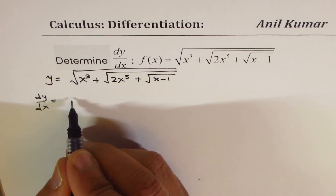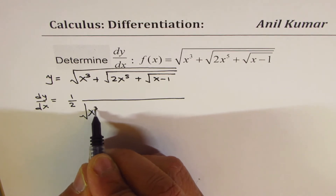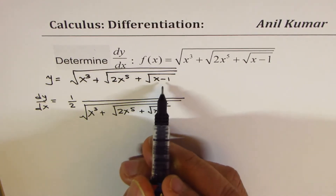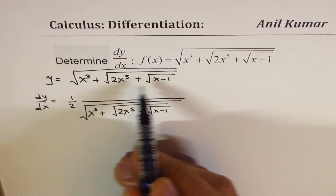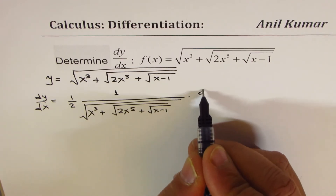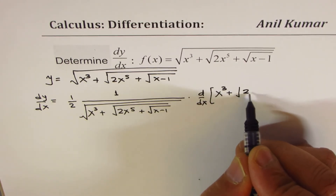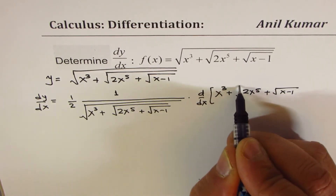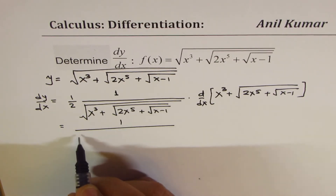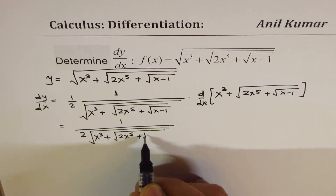Differentiating both sides, the outer derivative gives: 1 over 2 times the square root of the full expression x³ + √(2x⁵ + √(x − 1)), multiplied by the derivative of the inside function. The inside function is x³ + √(2x⁵ + √(x − 1)), so we apply d/dx to that entire expression.